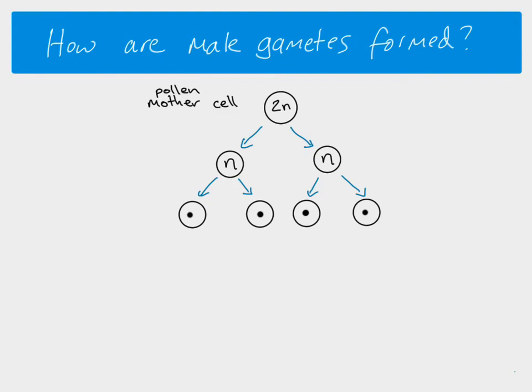Each of these cells now divides, but it divides by mitosis, and the division is not complete. The nucleus divides, so we end up with two haploid nuclei, but the cell does not cleave. Cytokinesis does not take place. So we have one cell with two haploid nuclei inside it, and that happens with each of these.